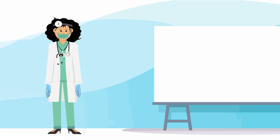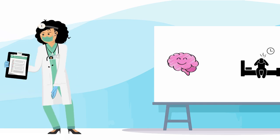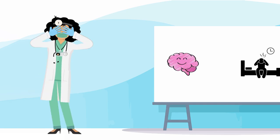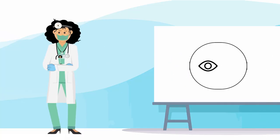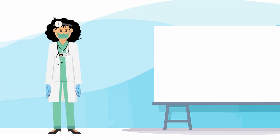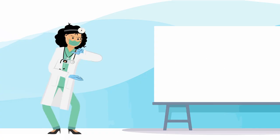So, during sleep paralysis, your brain wakes up before your body does. You become aware of your surroundings, but you're still in that REM stage where your body is locked and unable to move. That's why you feel awake, but can't move or speak.